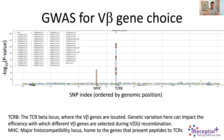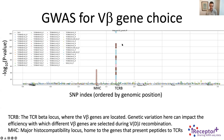At the TCR beta locus, cis variation influences V gene choice — for instance through RSS signal sequences or promoter variation that affects chromatin accessibility. Over at the MHC locus, this is trans variation on a different chromosome that still influences which V gene is chosen, likely because different HLA alleles make different contacts with different V genes and therefore shape the functional repertoire differently.